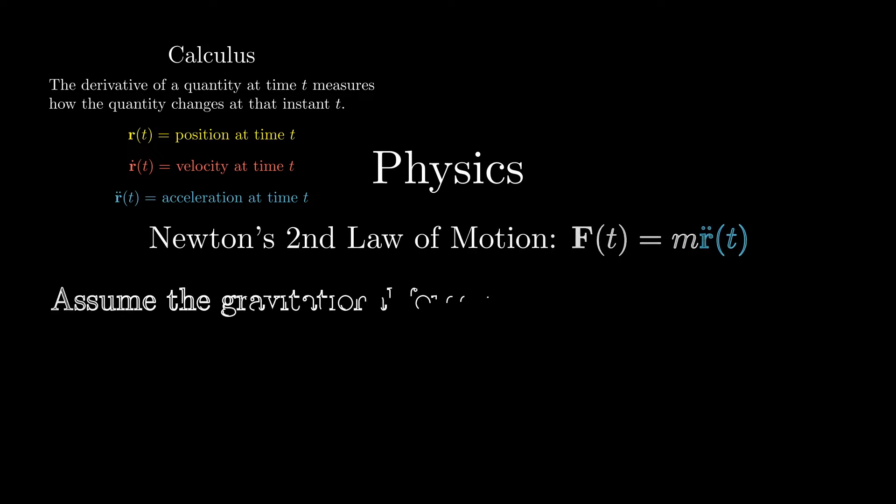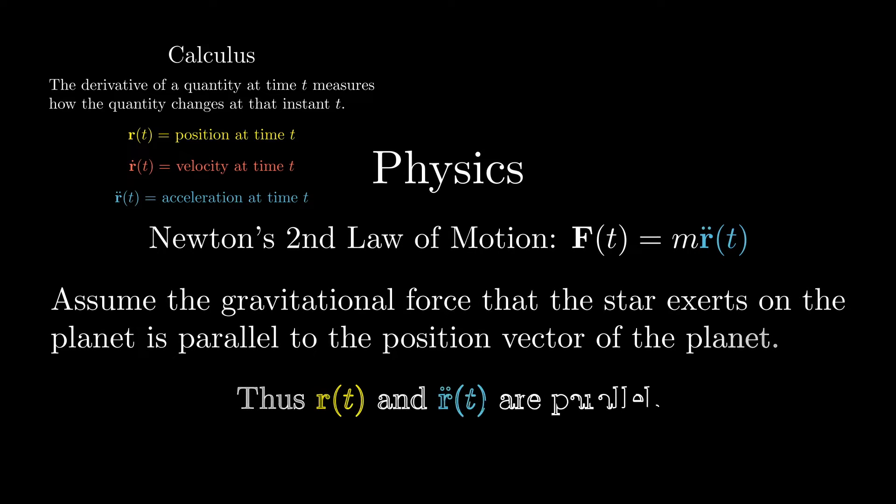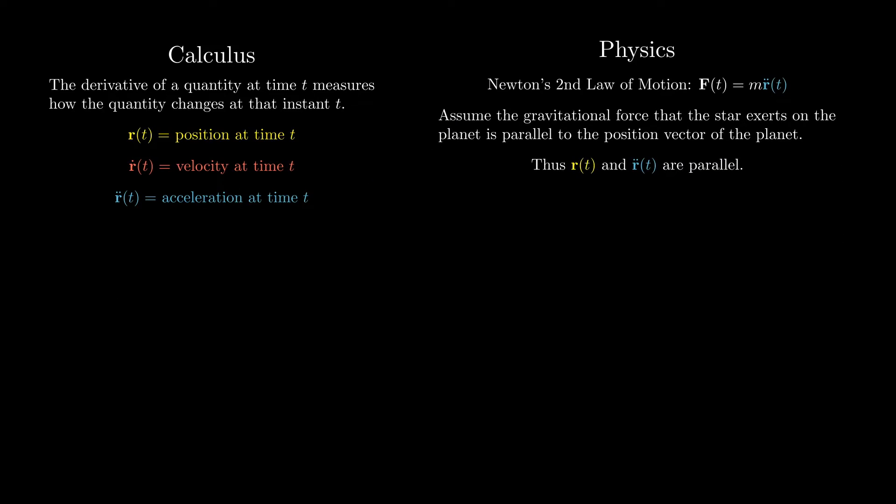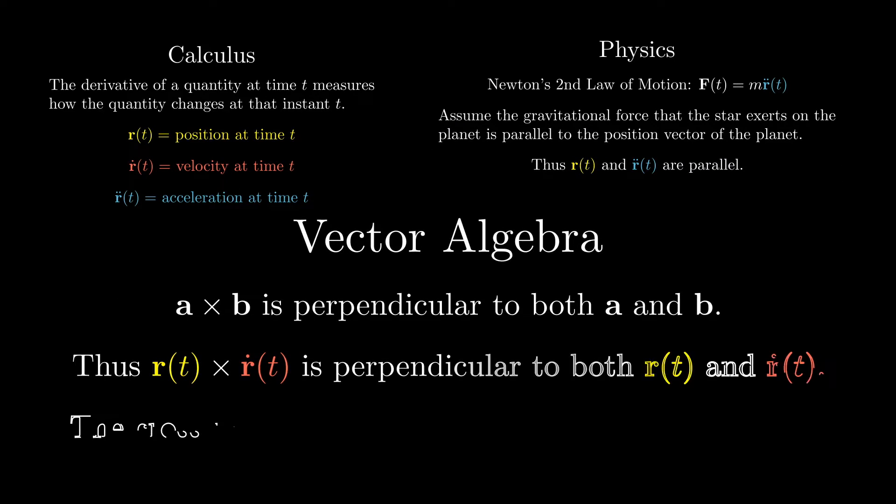From physics, Newton's second law tells us that the force on an object is equal to its mass times acceleration. We'll assume the gravitational force that the star exerts on the planet is parallel to the planet's position. In other words, r and r double dot are parallel to each other.